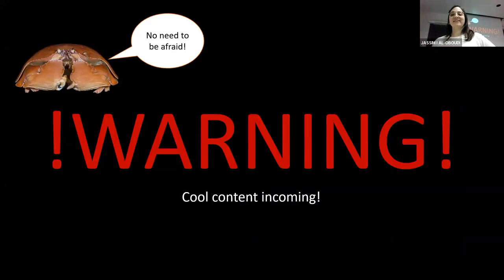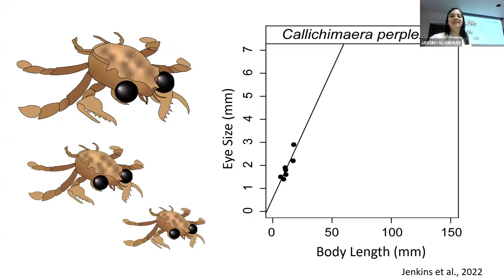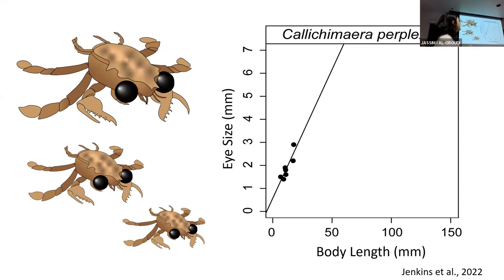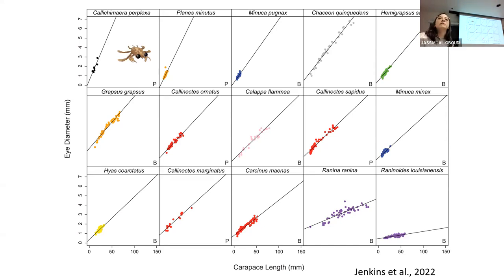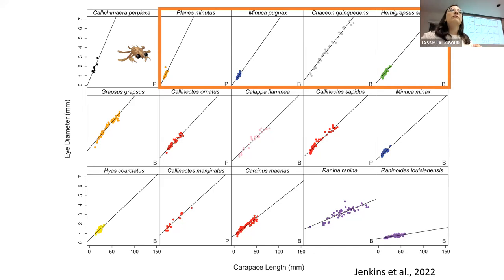Here's what the raw data looks like for our fossil crab: on the x-axis is body length, on the y-axis is eye size, and each data point is an individual fossil. The line through them is an optical growth rate telling us how fast the eye is growing relative to the body. When we put this in context of our full sample of crabs, a steeper slope means eyes growing faster, a smaller slope means slower. Our fossil crab has the fastest optical growth rate of our entire sample.